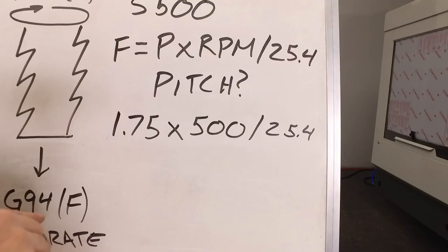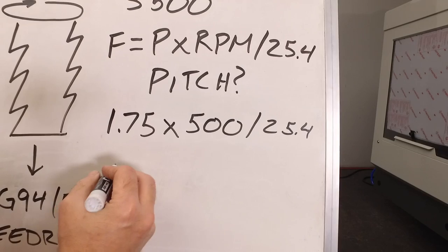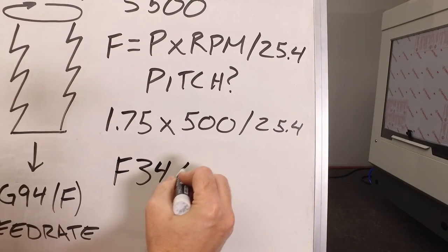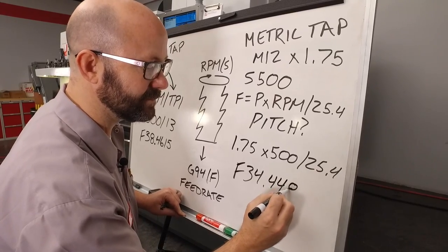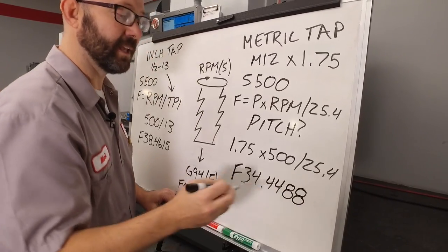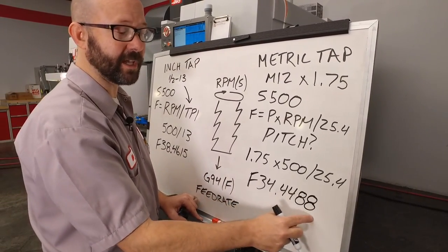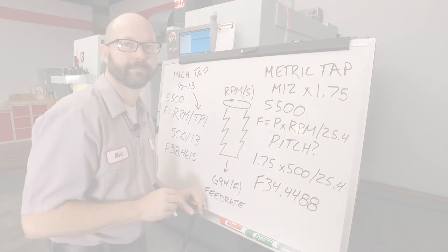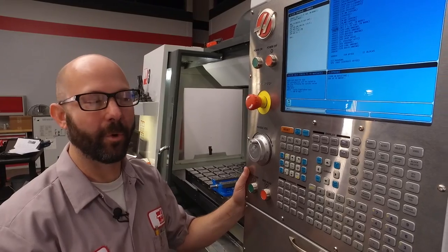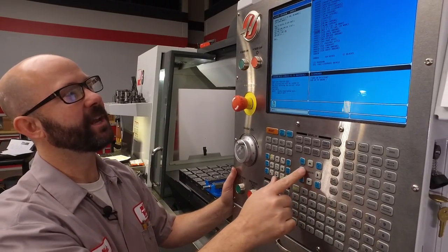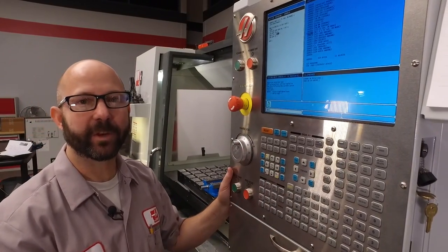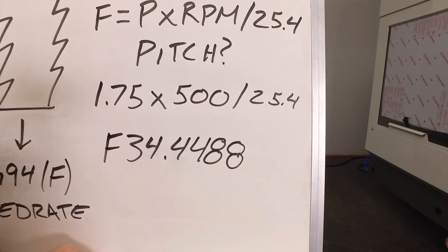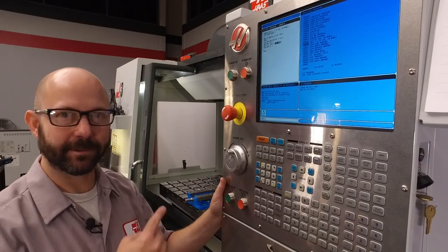When we plug this into a calculator, we're going to get a feed rate, an inch per minute value of 34.4488. And again, because we're in inch mode, we've rounded this out to four decimal places. Let's plug these into my program. In this program, we're going to tap that M12 hole. On our G84 line, we're going to add in the feed rate that we just calculated, F34.4488. With that done, let's run the tap.